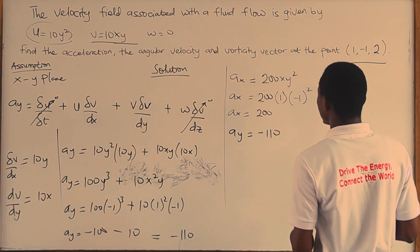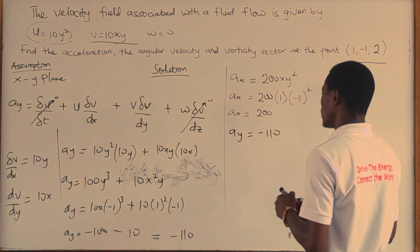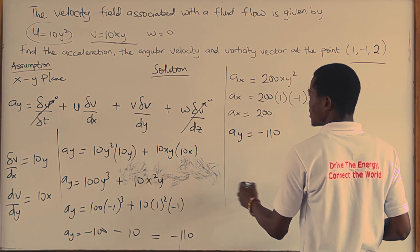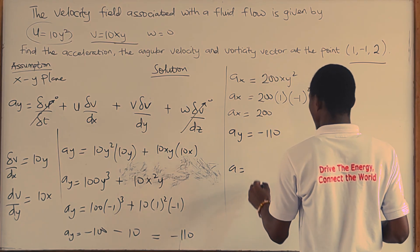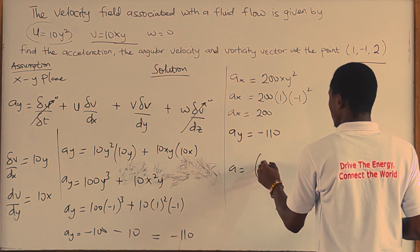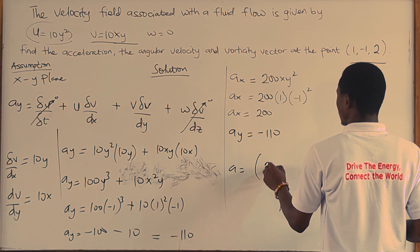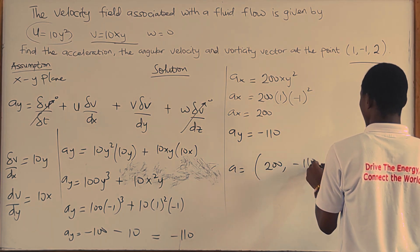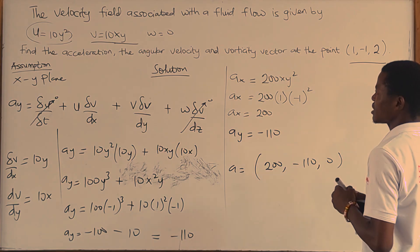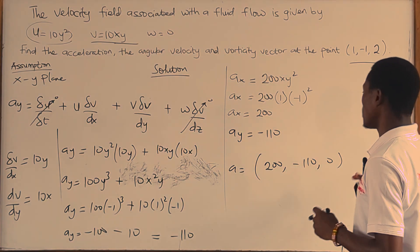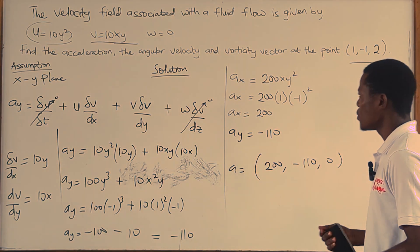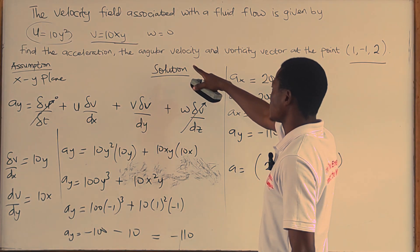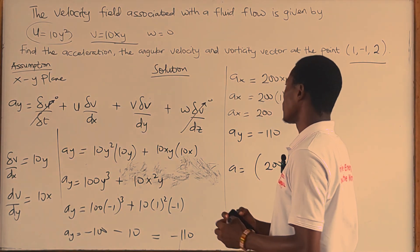So we can now resolve them in coordinates. Our acceleration vector is equal to the x component 200 and the y component -110, giving acceleration = (200, -110). That's how we go about the acceleration question. We move on to the next part, which is our angular velocity.